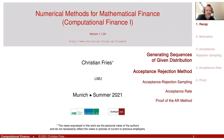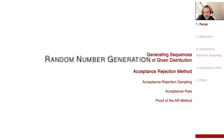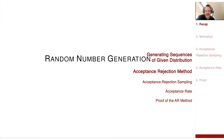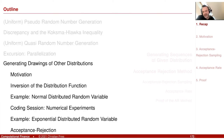Let's continue on numerical methods. We are still here in our session on random number generation. We started with looking at the inversion of the distribution function — that is the section on random number generation and we had the method: inversion of the distribution function.